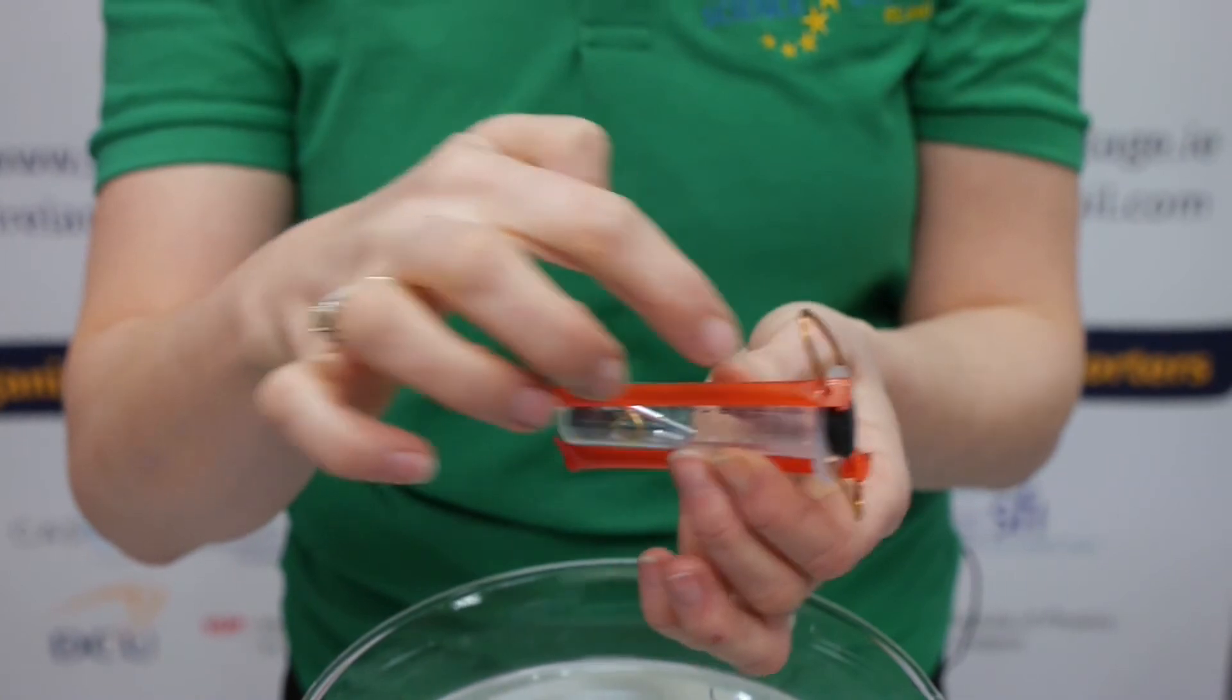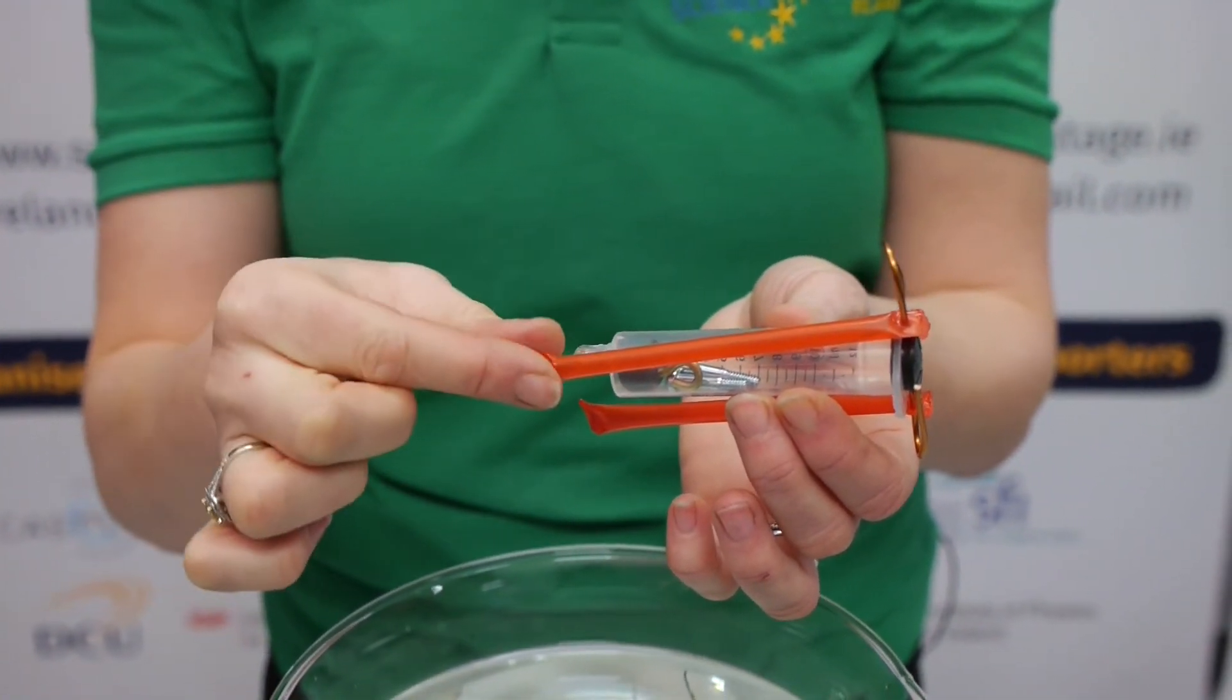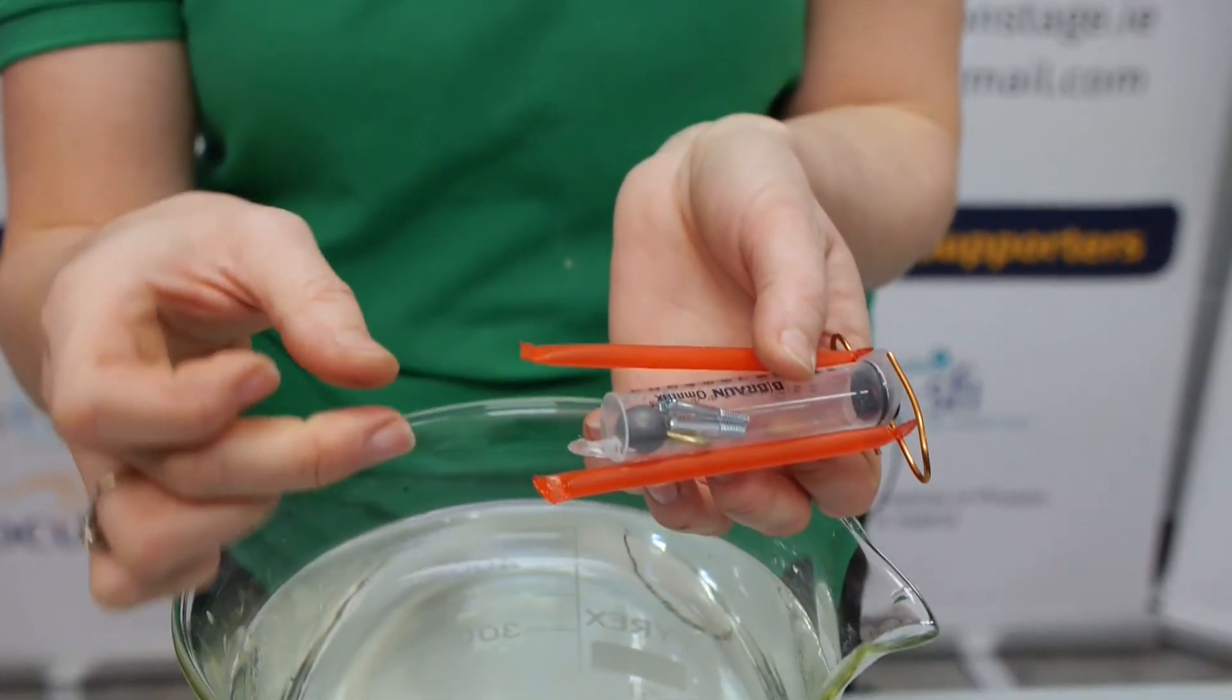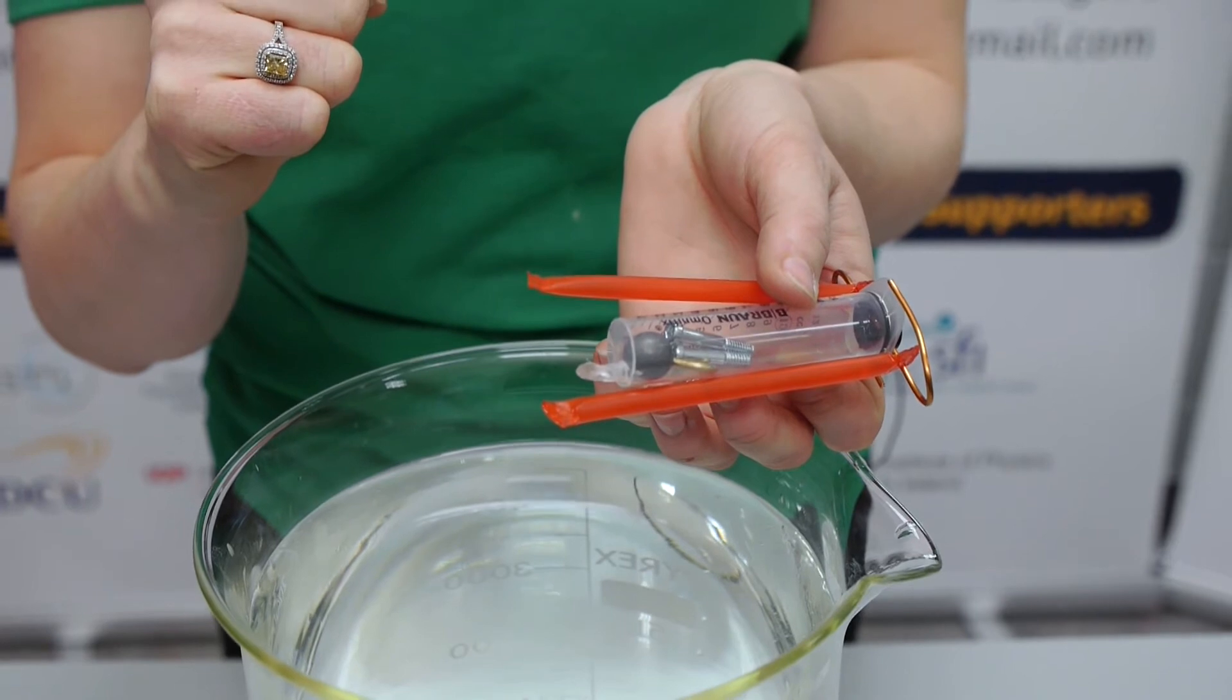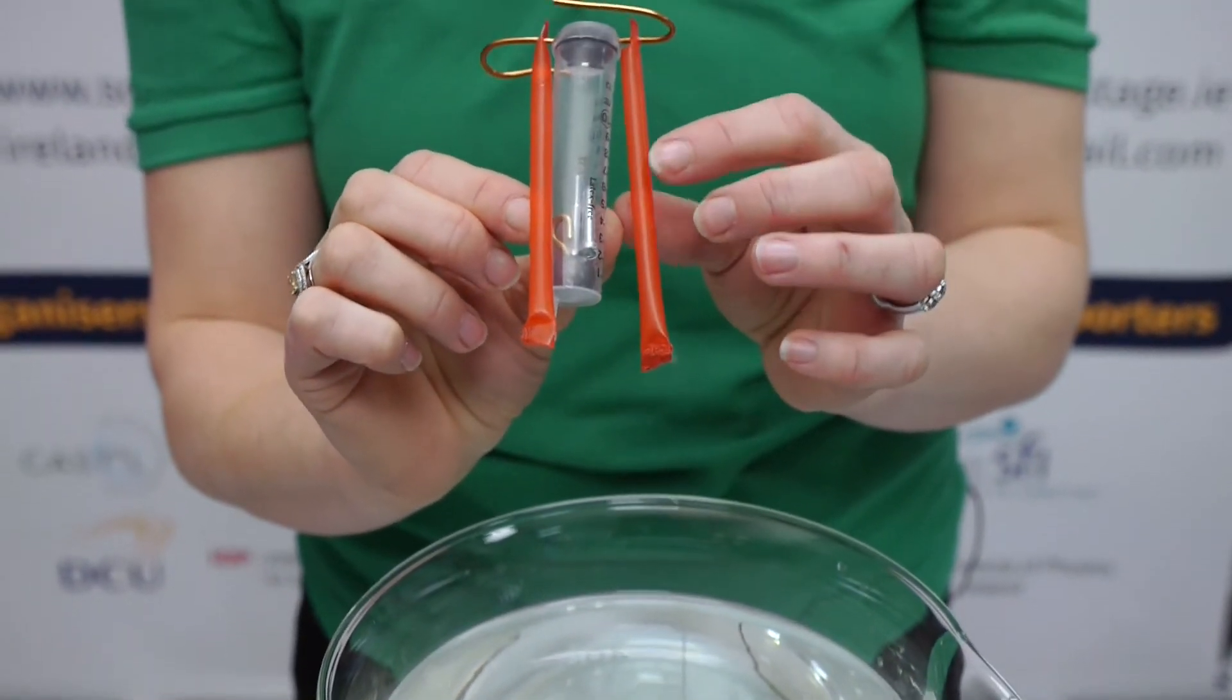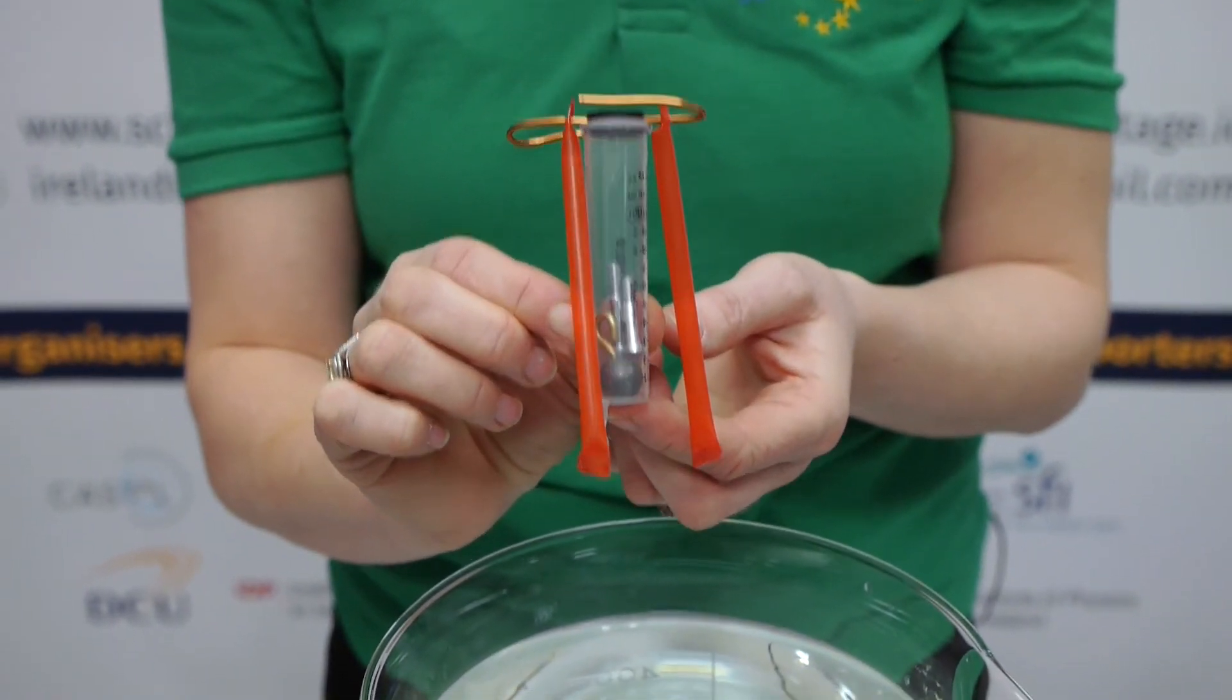The straws are sealed on either end by using heat and tongs, pinching the ends to seal them. I've also sealed the end of the syringe so that no water can get in or out. Inside the syringe we have some weights so that when we put it into the water it can actually sink.